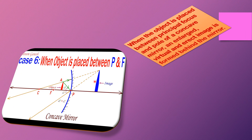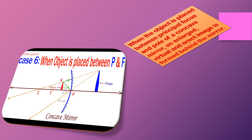Case six: when the object is placed between P and F — P for pole and F for focus. This is the object. Behind the concave mirror, when the object is placed between the principal focus and the pole of a concave mirror, an enlarged, virtual, and erect image is formed behind the mirror.